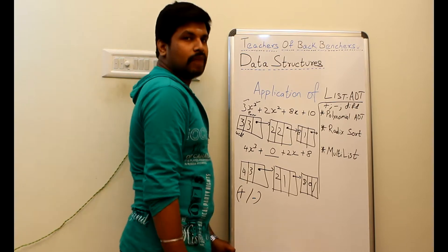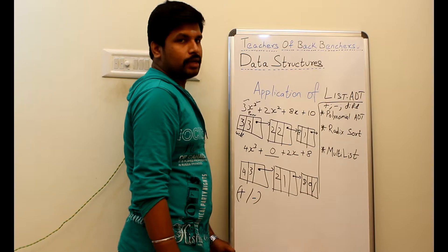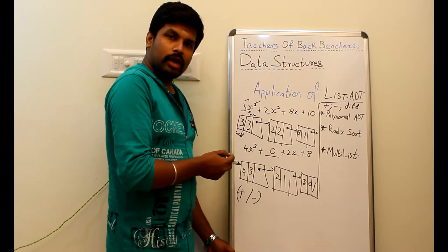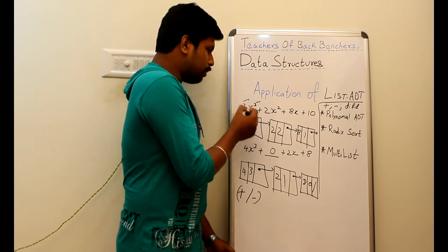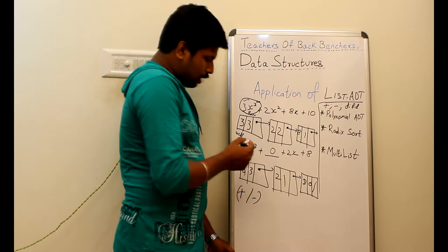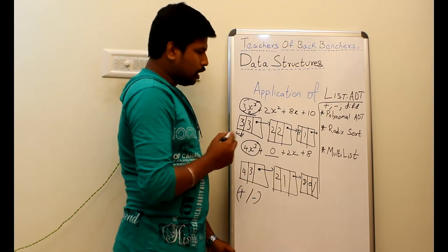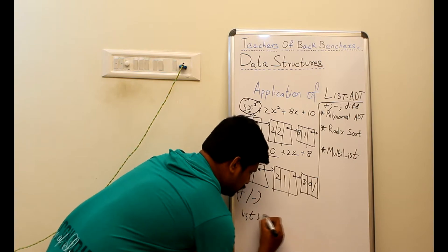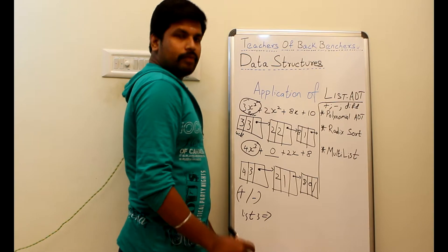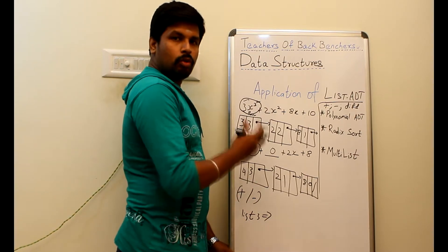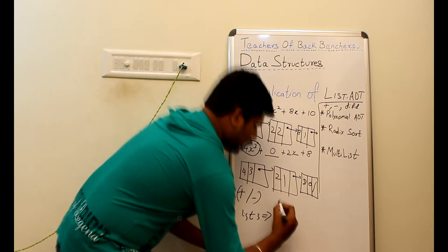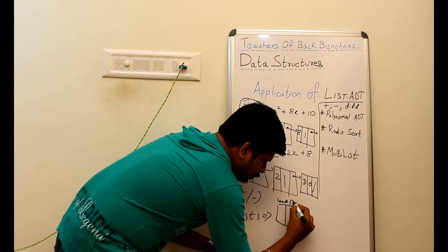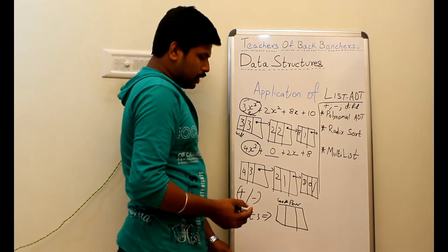To add or subtract the two polynomials, we check conditions. First, we check whether both equations have valid values. Second, we use pointers: pointer 1 points to list 1, pointer 2 points to list 2, and we create a new list 3. We are going to add both polynomial equations, so we create a new node where the first field is the coefficient and the second field is the power.